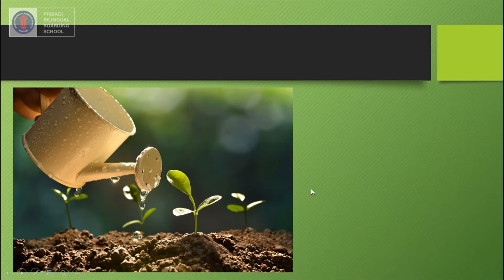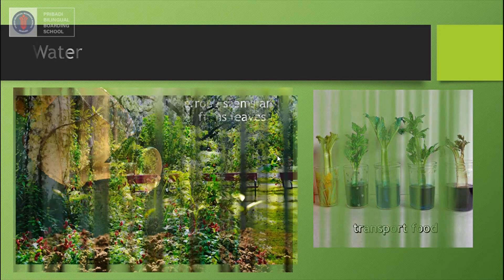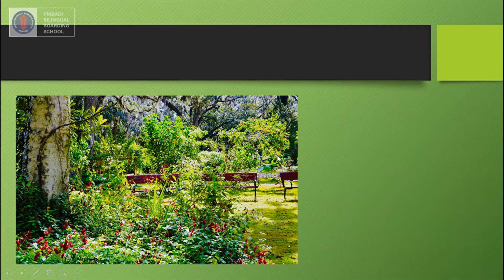As you can see from the pictures, the next factor will make the stem strong and firm the leaves. This factor also helps plants to transport food from the roots to the leaves and other parts of the plant. The factor being described here is water.